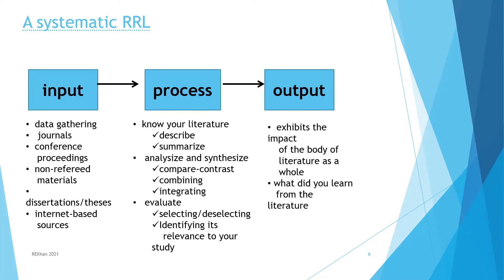If we look at it from a systematic point of view, we look at the input, process, and output of the RRL. First comes your data gathering through journals, conference proceedings, and non-refereed materials, as well as dissertations and internet-based sources. This data you process to make your literature by describing and summarizing, analyzing and synthesizing, and evaluating the materials that you have found. But finally, when you come to write your RRL, you exhibit the impact of the body of literature as a whole. What did you learn from the literature?